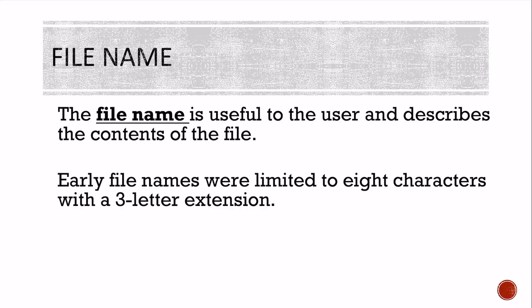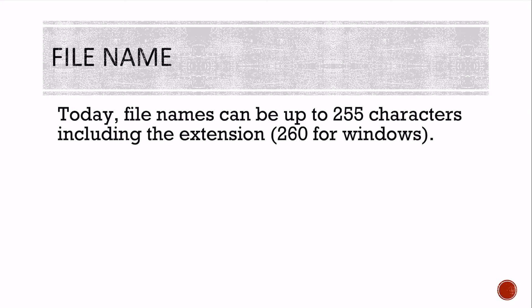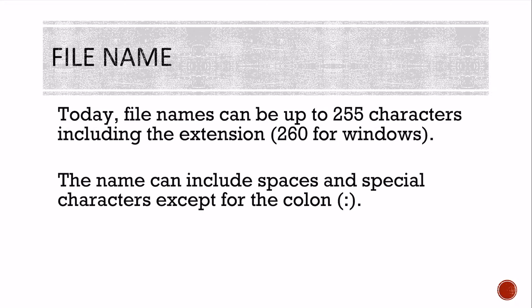Early file names were limited to eight characters with a three-letter extension. Back 15 to 20 years ago when they first started, you were limited to just eight characters — no special characters such as asterisks or dollar signs. Today, file names can be up to 255 characters including the extension on a Mac. On Windows, you can go up to 260 characters. The name can include spaces and special characters, except the colon, which is reserved on Windows machines to designate different drives.